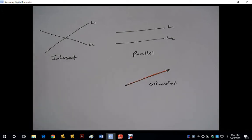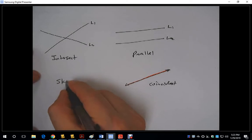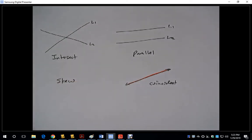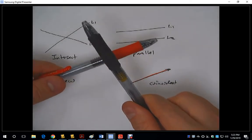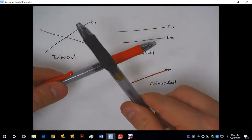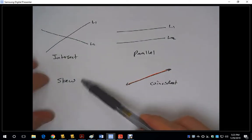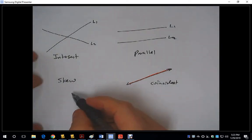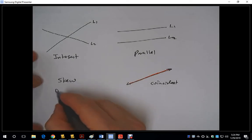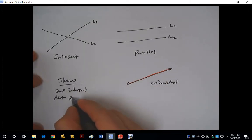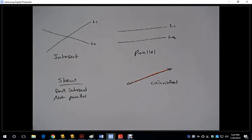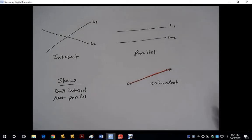Now, in three-dimensional space, there is a third option, and that third option is called skew. When lines are skew, it means that they may look like they intersect, but if you look at them from a different angle, you're going to see that they do not intersect. So if you have skew lines, you are looking at lines that don't intersect and they are not parallel.